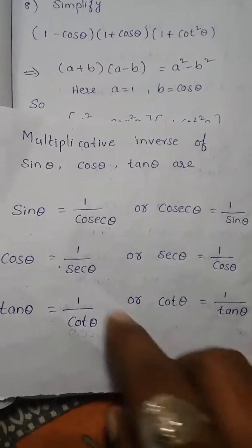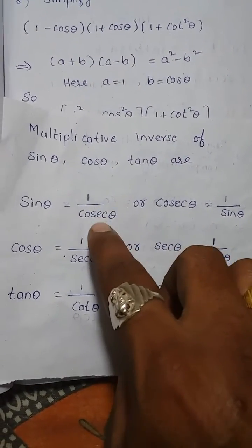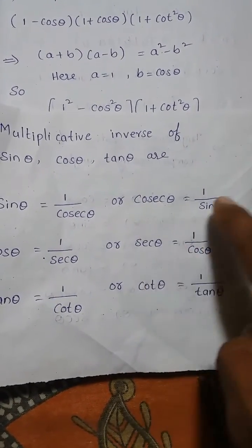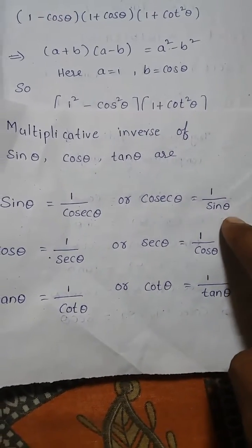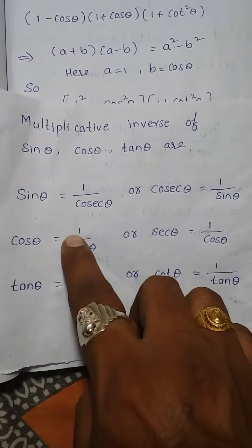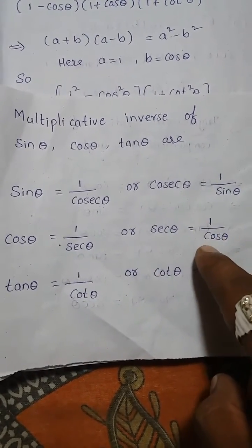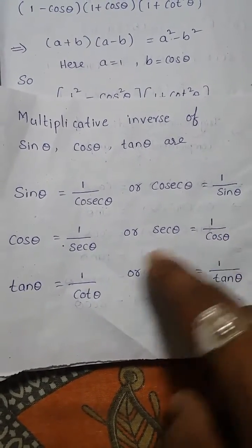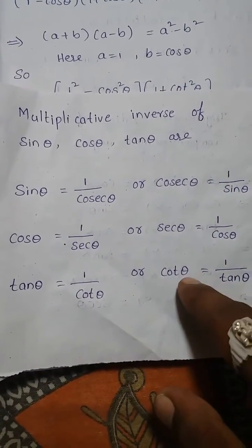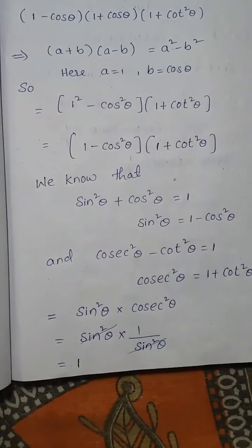As a reminder: the multiplicative inverse of sin is 1 by cosec theta, cosec inverse is 1 by sin theta, cos inverse is 1 by sec theta, sec inverse is 1 by cos theta, tan inverse is 1 by cot theta, and cot inverse is 1 by tan theta.